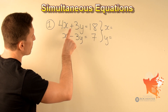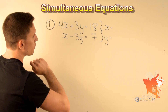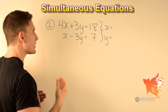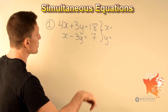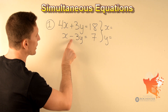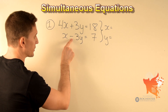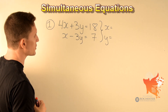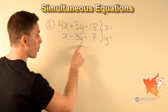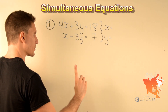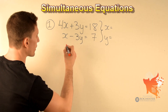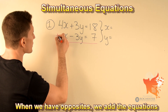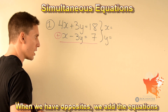Notice that we've got plus 3y here and minus 3y down here. Whenever we've got two things which look exactly the same but have opposite signs, we should be really excited because it means we can eliminate the variable y in one step. And that step is very simple.